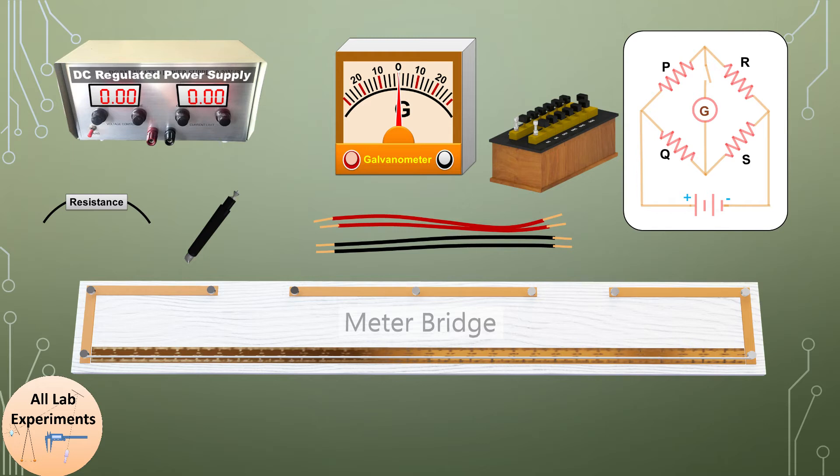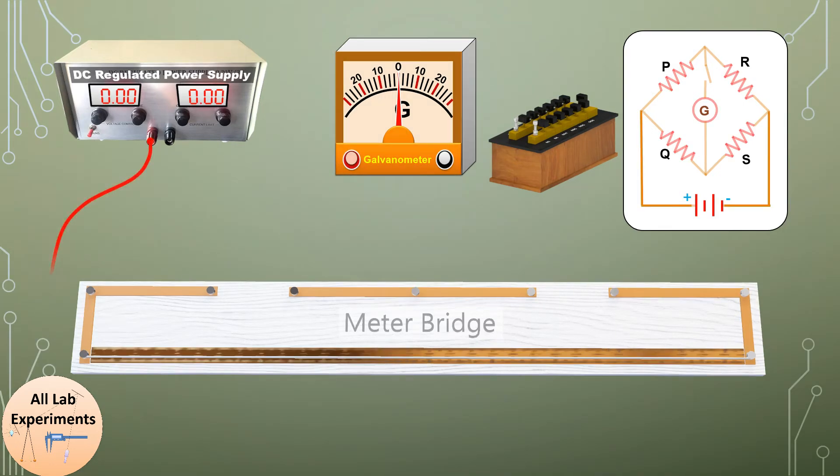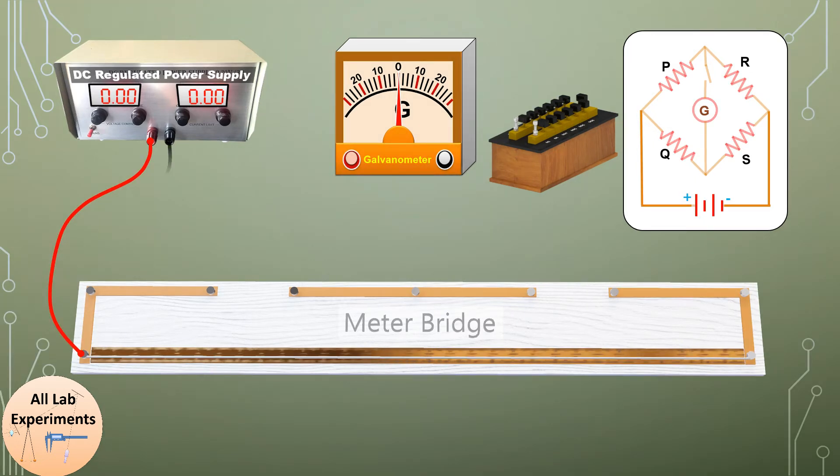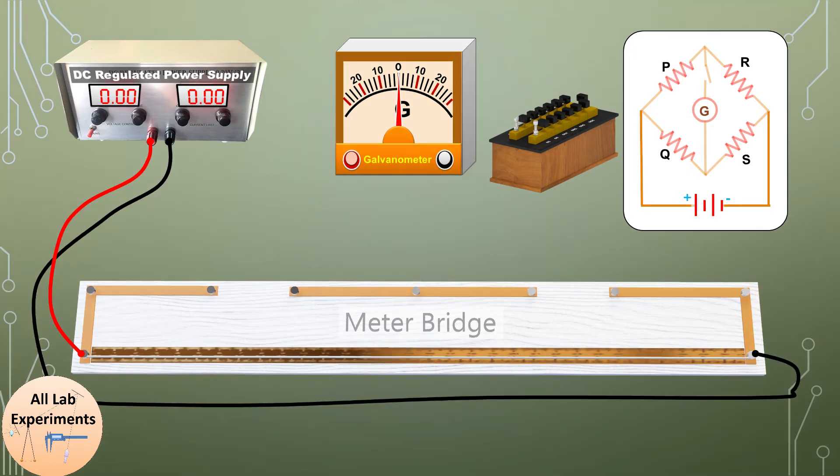First of all we are going to connect the positive end of the DC power supply with the left end of the meter bridge, and the negative of the DC regulated power supply is connected to the right end of the meter bridge. You can notice that in the circuit diagram the battery portion has been highlighted.